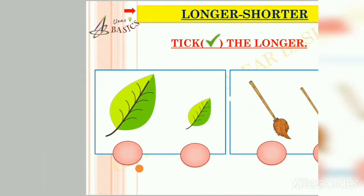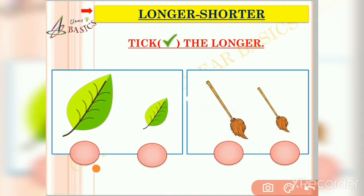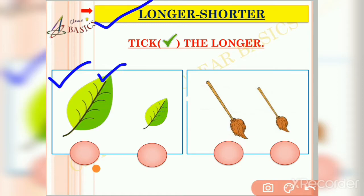Now friends, let us do some activity. You can identify on your own and tick the longer one between these two objects. In the first picture, the left one is longer than the right one, so we will tick the longer one. In the second picture, the left one is longer than the right one, so let us tick the longer one.